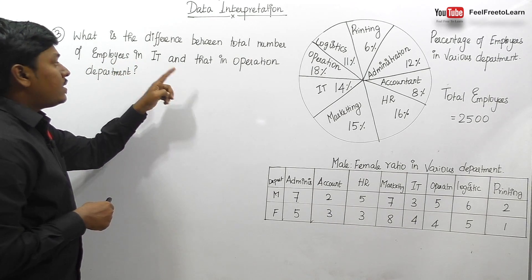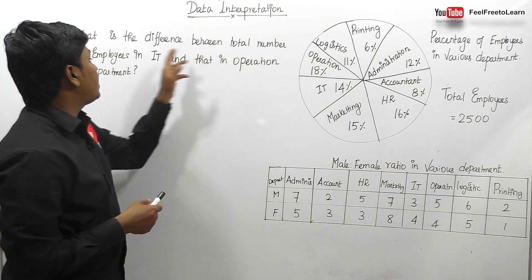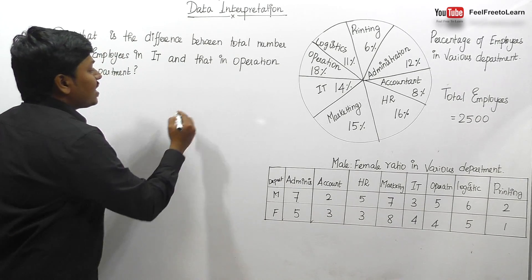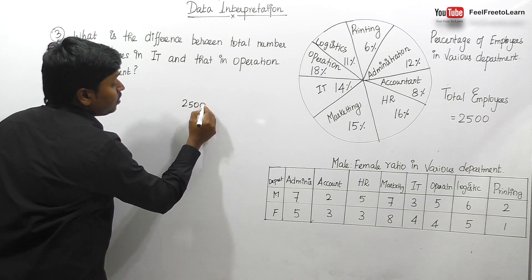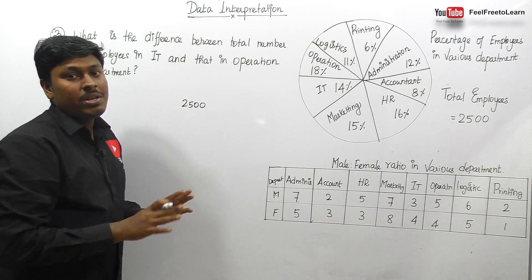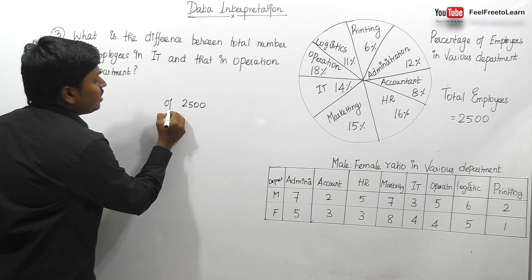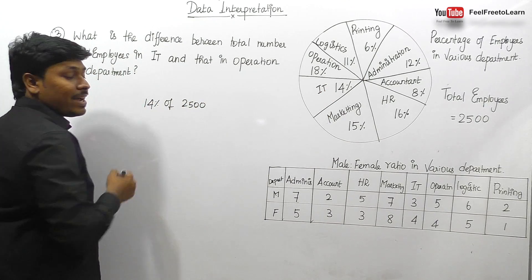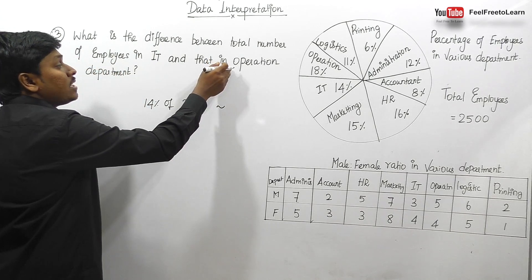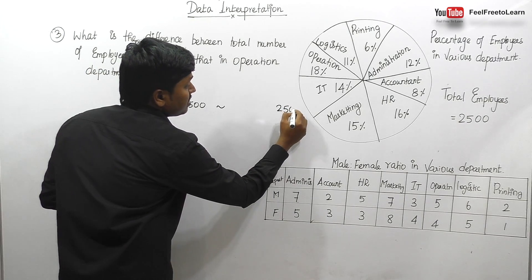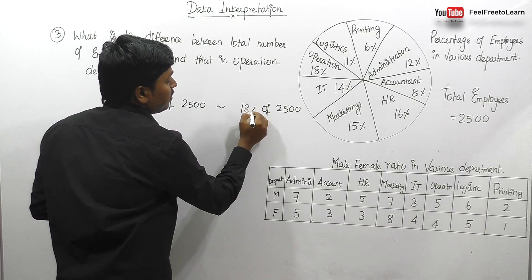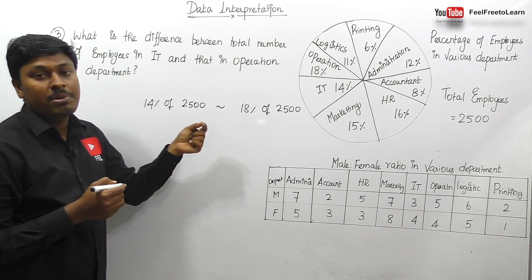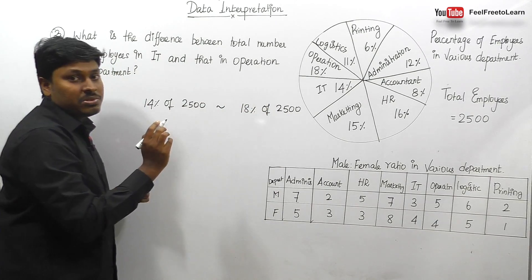Question number three: what is the difference between the total number of employees in IT and those in the Operation department? We need to find the difference, which is a subtraction. Out of 2500, IT is 14% and Operation is 18%. Important note: unlike the previous ratio questions where we could cancel 2500, here we need the actual difference, so don't cancel the 2500 values.